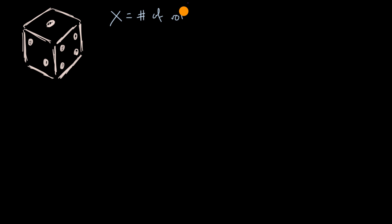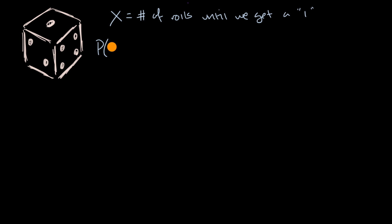Let's say we're going to play a game where on each person's turn, they keep rolling a fair six-sided die until we get a one. We just want to see how many rolls does it take. So let's define a random variable — let's call it X — and let's call it the number of rolls until we get a one. What's the probability that X is equal to one?